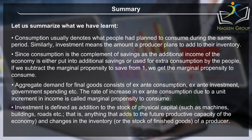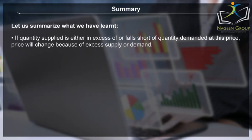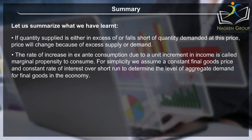Investment is defined as addition to the stock of physical capital such as machines, buildings, roads, etc. — that is, anything that adds to the future productive capacity of the economy — and changes in the inventory or the stock of finished goods of a producer. If quantity supplied is either in excess of or falls short of quantity demanded, price will change because of excess supply or demand. For simplicity, we assume a constant final goods price and constant rate of interest over the short run to determine the level of aggregate demand for final goods in the economy.